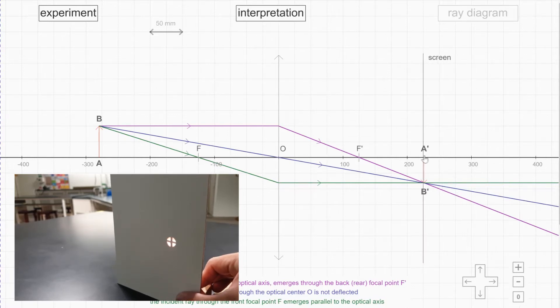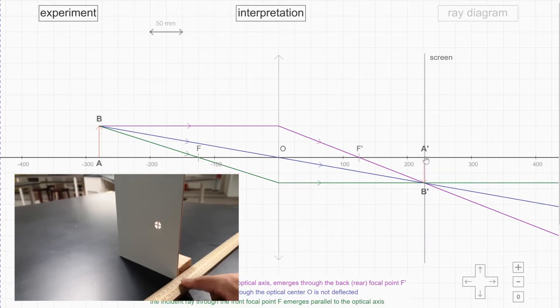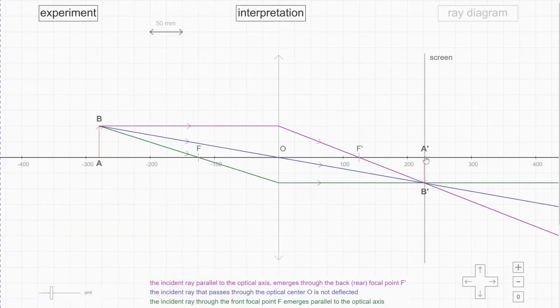You will form a sharp image on the screen, so it will be real because it can be captured on the screen and it's inverted as you can see here. And if you continue to shift the screen forward, once again the image will become blur. So that's how you get the sharp image.